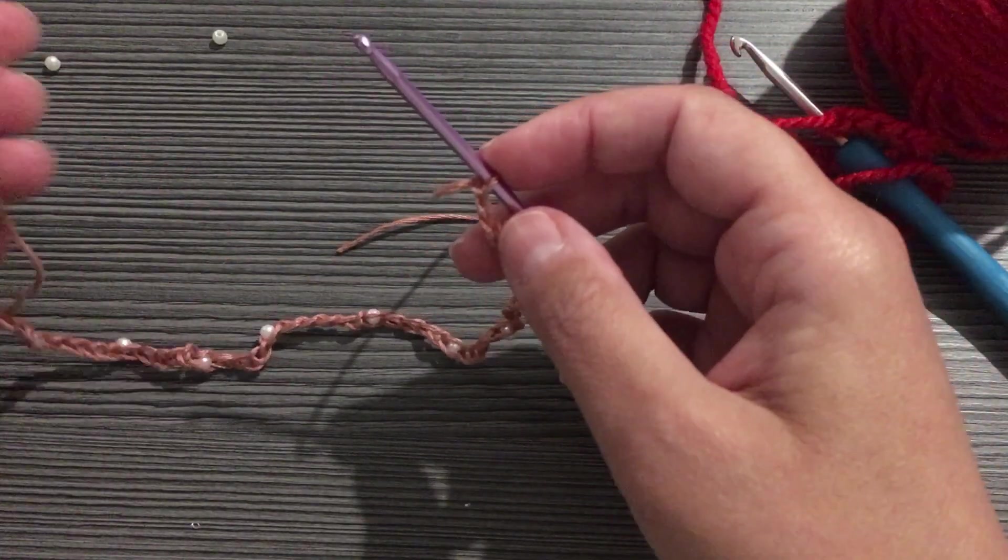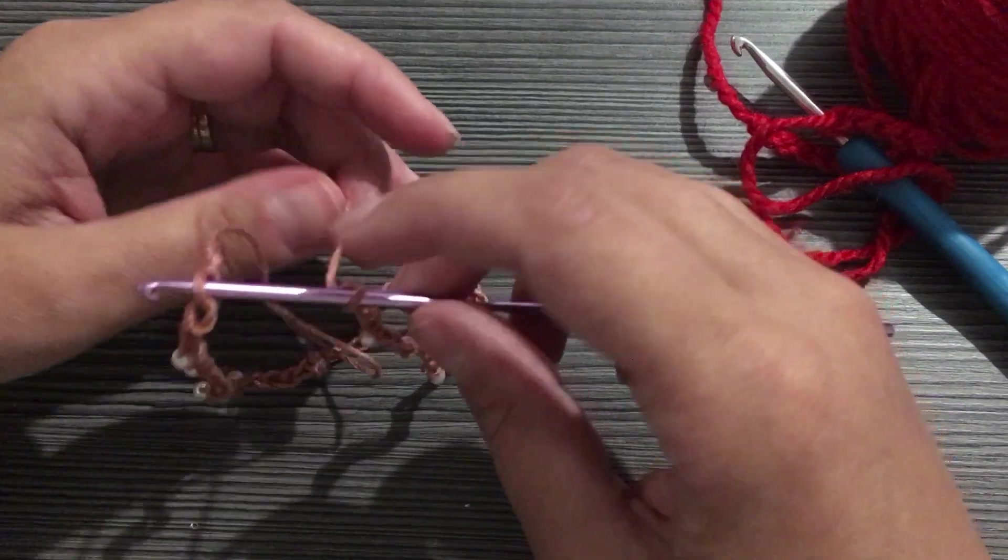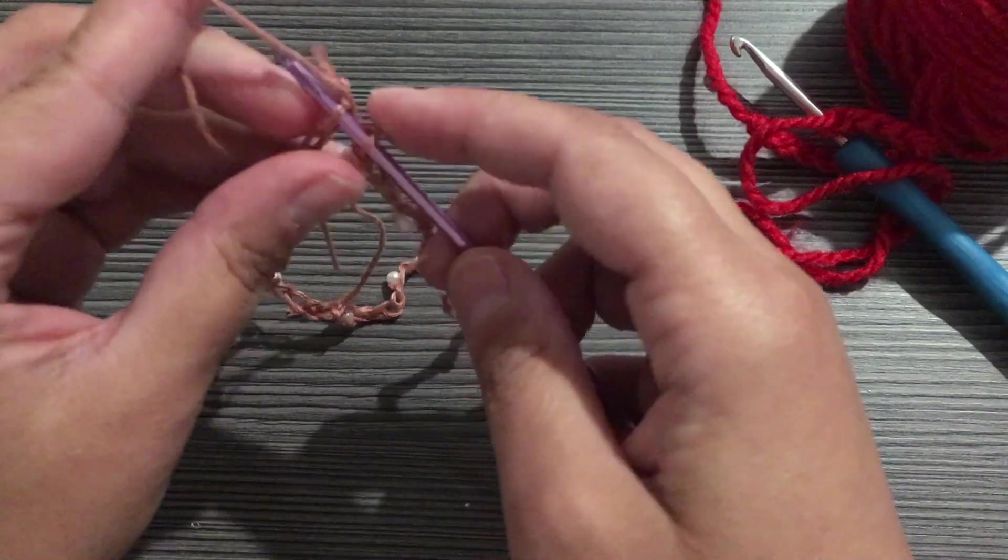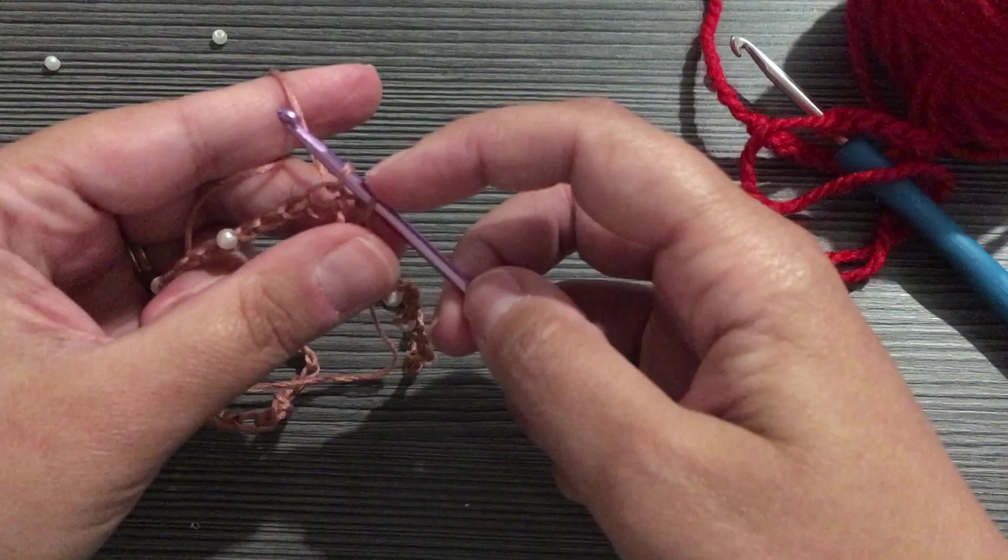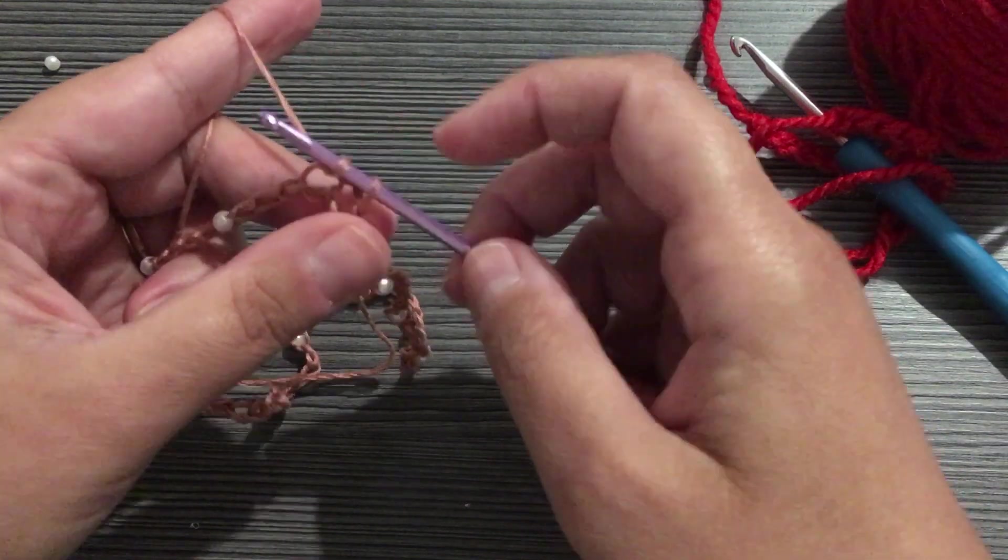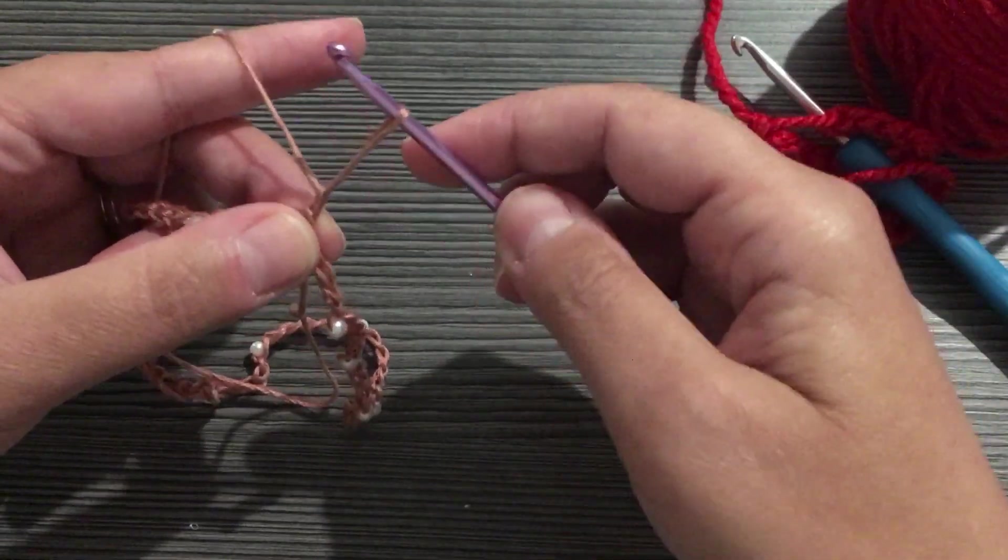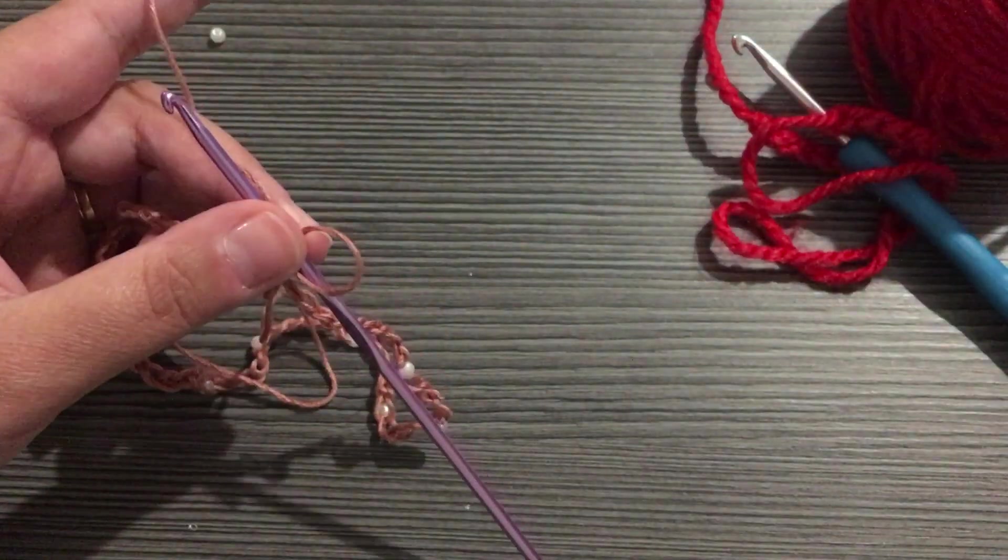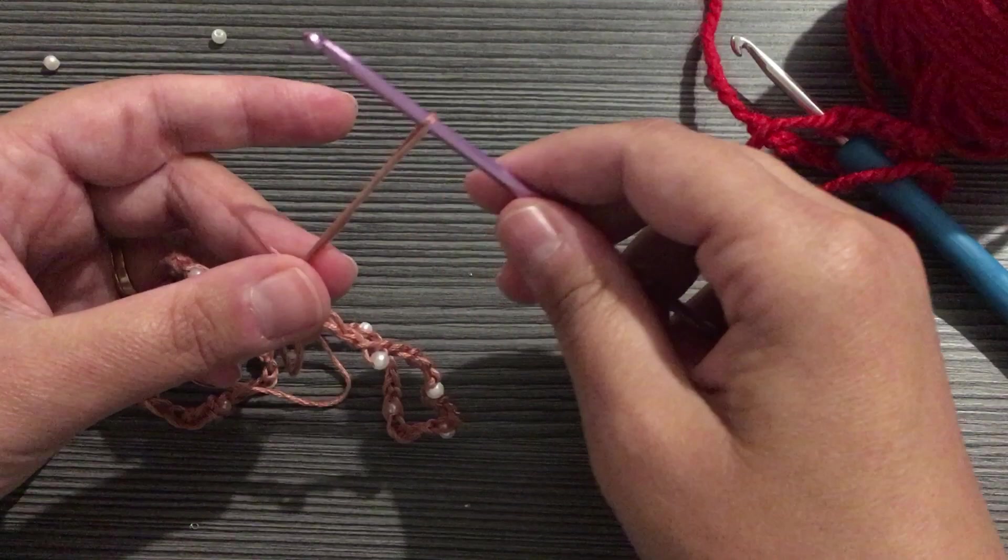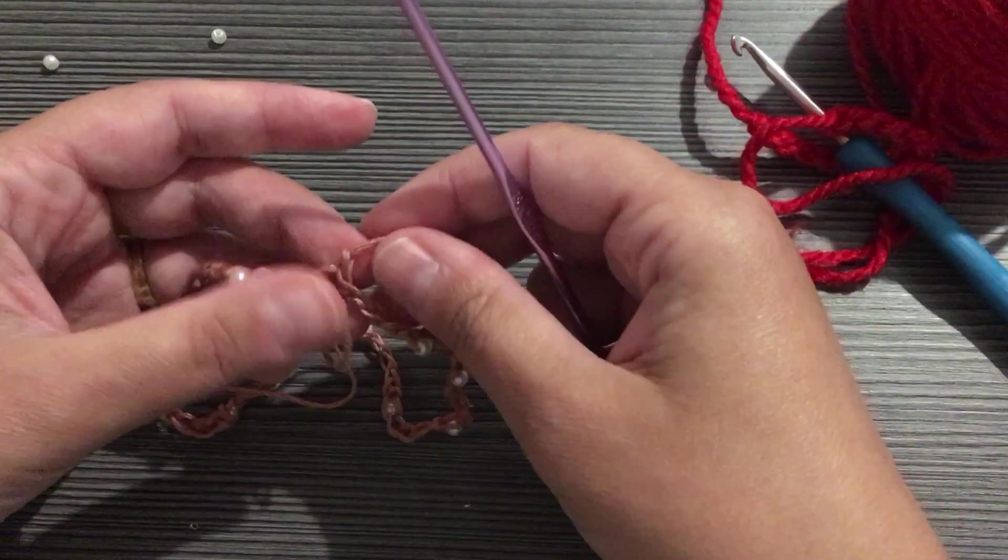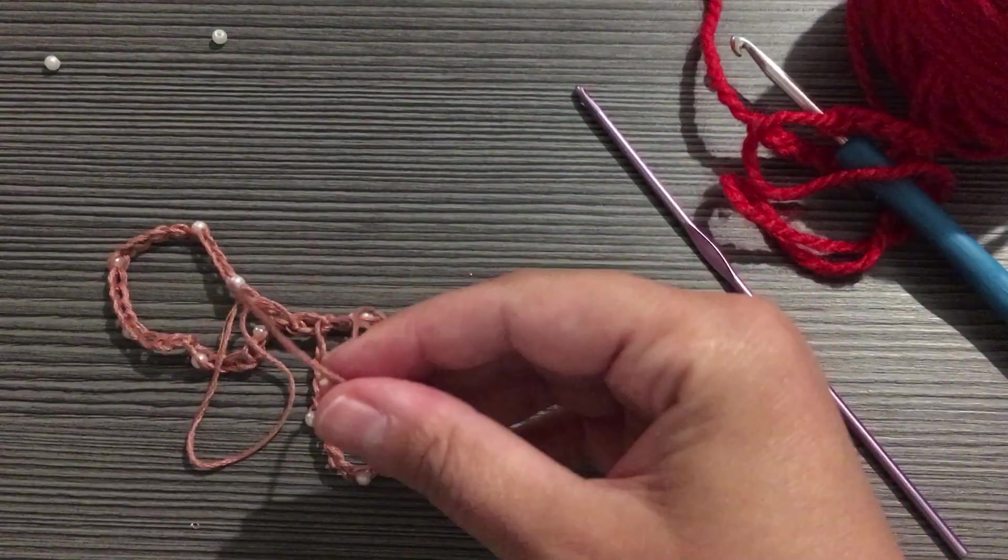Now we're gonna go to our first stitch. We're gonna take our yarn, wrap it around, and we're gonna pull it through. So we've got two on our hook, and this loop we're gonna pull through the loop that's on our hook. Then we're gonna chain one and we're gonna cut our yarn. Then we're gonna pull our hook, and pull that chain that we made tight. And now it's time to weave in our ends.